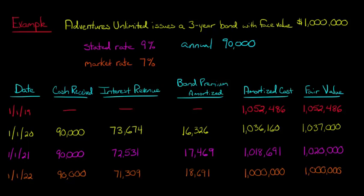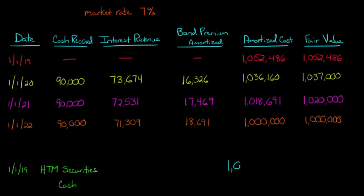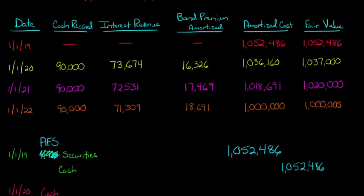We're going to have the same exact journal entries that we did for the held-to-maturity bonds, except there's going to be one additional entry. So we're going to debit Available for Sale Securities — AFS — for $1,052,486, and then we're going to credit cash for $1,052,486. It's the same as what we did with held-to-maturity; we're just calling it Available for Sale instead of HTM on our balance sheet.